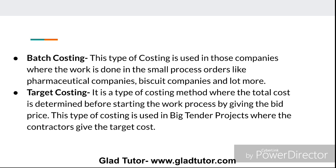The third type of costing is batch costing. This method of costing is used in those companies where the work is done in small process orders, like pharmaceutical companies, biscuit companies, and more. A batch is when we divide work into small process orders so the work gets done quickly. For example, in pharmaceutical companies, syringes have separate batches. This is batch costing.